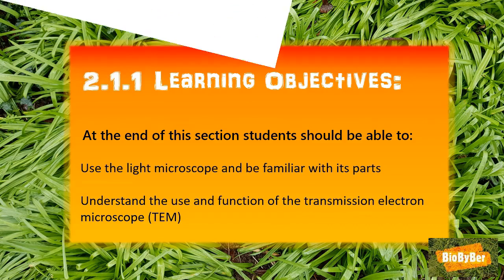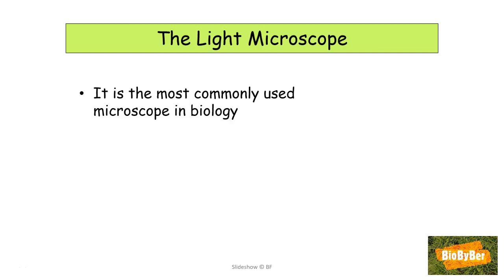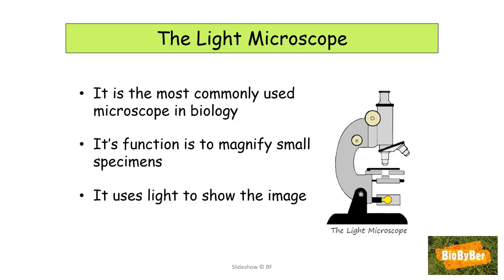Let's sort out microscopes by first looking at the light microscope. The light microscope is the most commonly used microscope in biology. Its function is to magnify small specimens — it makes objects appear larger. It uses light to show the image. Depending on the model, this light might come from a light bulb when you plug in the microscope, or a mirror might be used to focus the light up through the specimen.